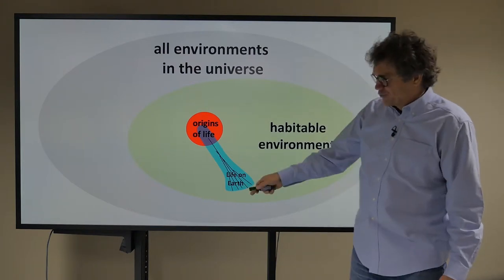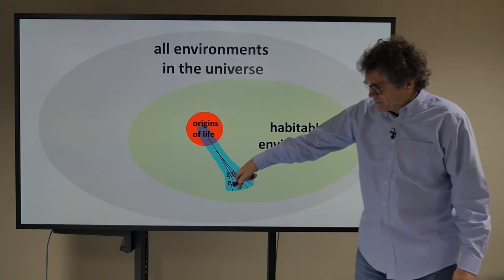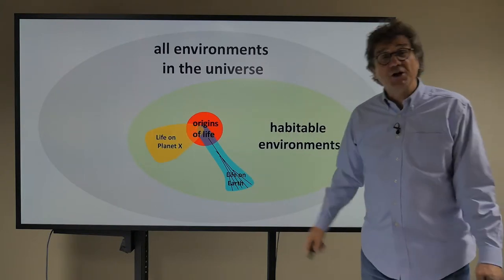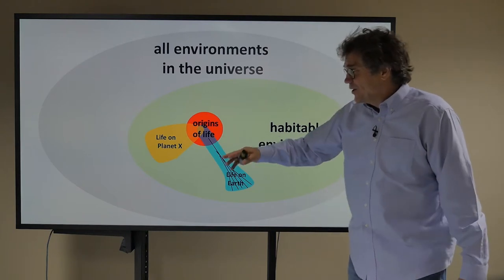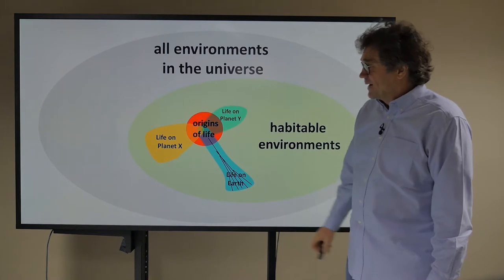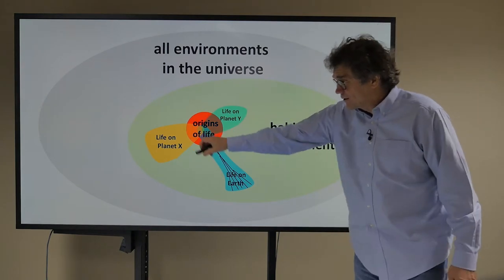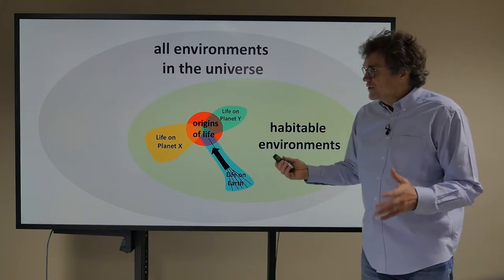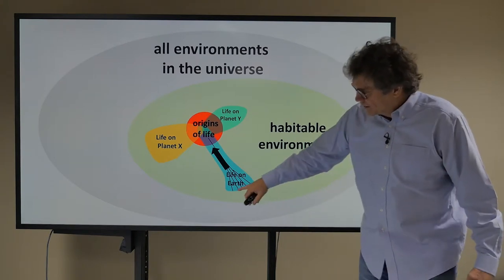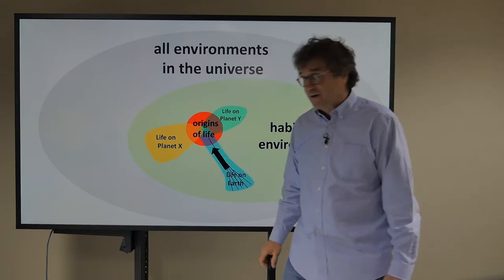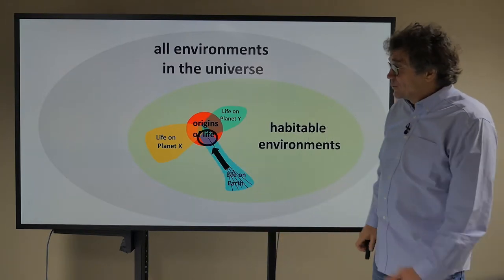So here's like the phylogenetic tree. You start here and you end up here with people and elephants. Now let's suppose that there's another planet and the other planet is yellow and it starts here and then it evolves in that direction. And that's planet X. And then there's planet Y where it starts here with the origin of life and it evolves in this direction. So if we want to understand the origins of life what we should do is look at this phylogenetic tree and trace it back to Luca, the roots of the tree of life. And that's what we want to do.